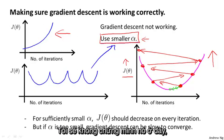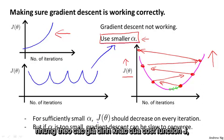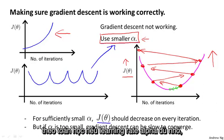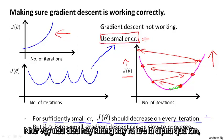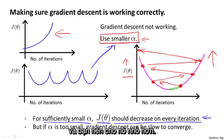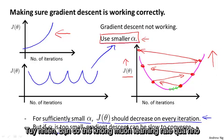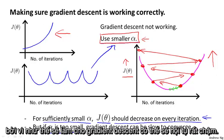I'm not going to prove it here, but under mild assumptions about the cost function J — which does hold true for linear regression — mathematicians have shown that if your learning rate alpha is small enough, then J(θ) should decrease on every single iteration. So if this doesn't happen, it probably means alpha is too big and you should set it smaller. But of course, you also don't want your learning rate to be too small, because if you do that, gradient descent can be slow to converge.